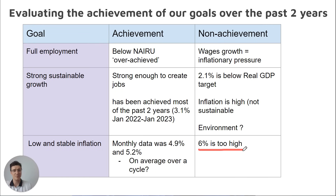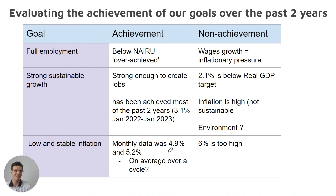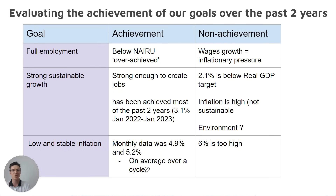Low and stable inflation is a little bit tricky. Clearly it's too high at 6% — we definitely haven't achieved it. But if VCE forced you to make an argument for how we have achieved it, there are a couple of ways. You could talk about the monthly rate of inflation, which is slowing. You could also talk about the trend — we used to be at 8%, now we're at 6%, so we're moving towards 2% to 3%. Or you could say that on average over a cycle, inflation has been achieved. I don't think VCE should ask you to evaluate low and stable inflation, but you never know.